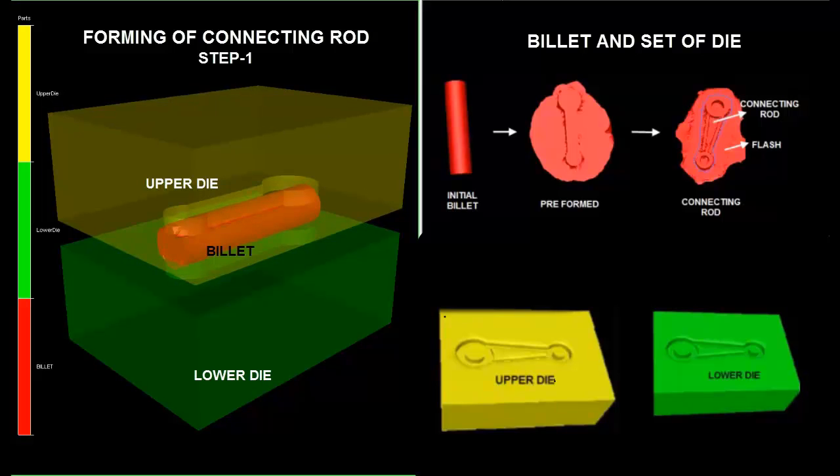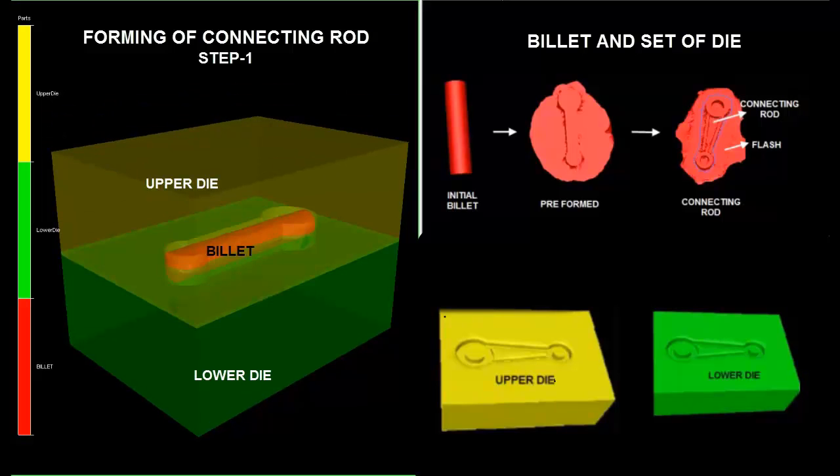With upper die in yellow, lower die in green, and a cylindrical billet sandwiched in between.